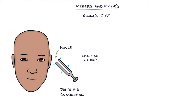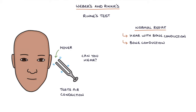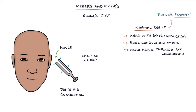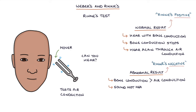A normal result on Rinne's test is when the patient can hear the humming sound with bone conduction, then the bone conduction sound stops, and when the tuning fork is moved next to the ear rather than on the mastoid process, they can hear the sound again through air conduction. It's normal for air conduction to be better than bone conduction, and this is referred to as Rinne's positive. An abnormal result — Rinne's negative — is when bone conduction is better than air conduction: the sound is not heard after removing the tuning fork from the mastoid process and holding it near the ear canal, suggesting a conductive cause.